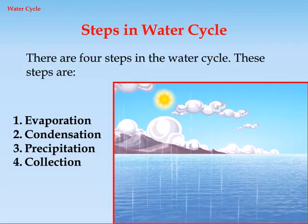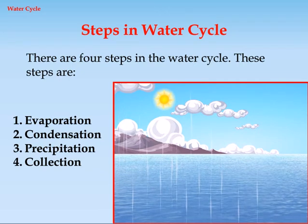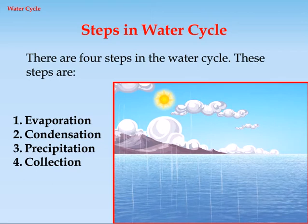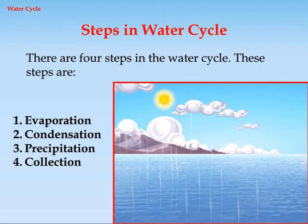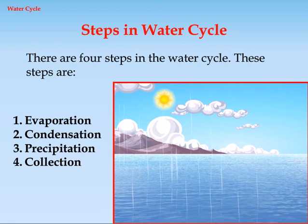Steps in Water Cycle: There are 4 steps in the water cycle. These steps are: 1. Evaporation, 2. Condensation, 3. Precipitation, 4. Collection.